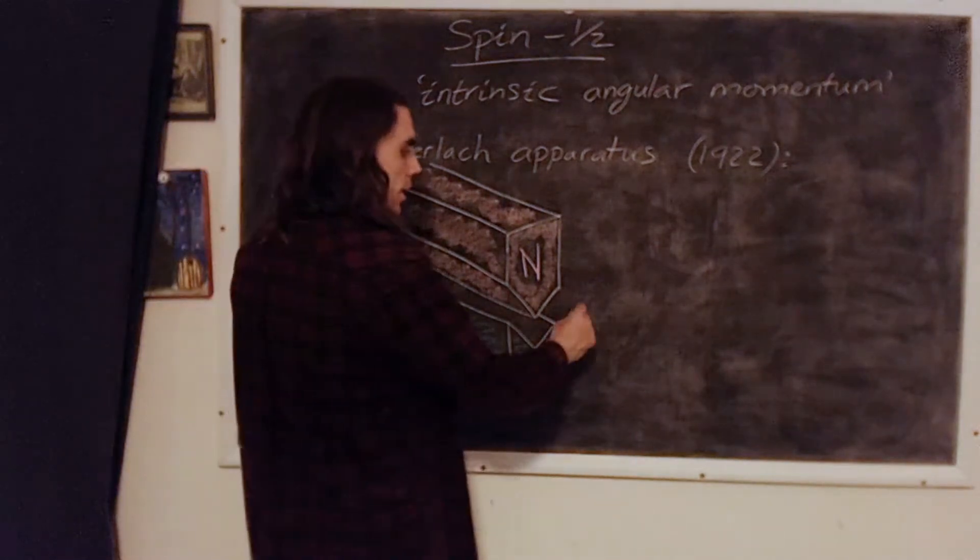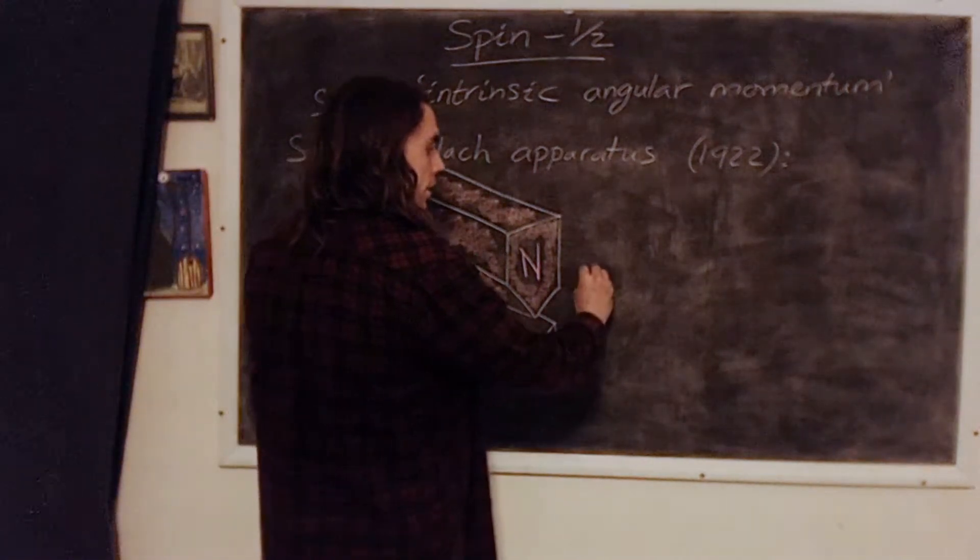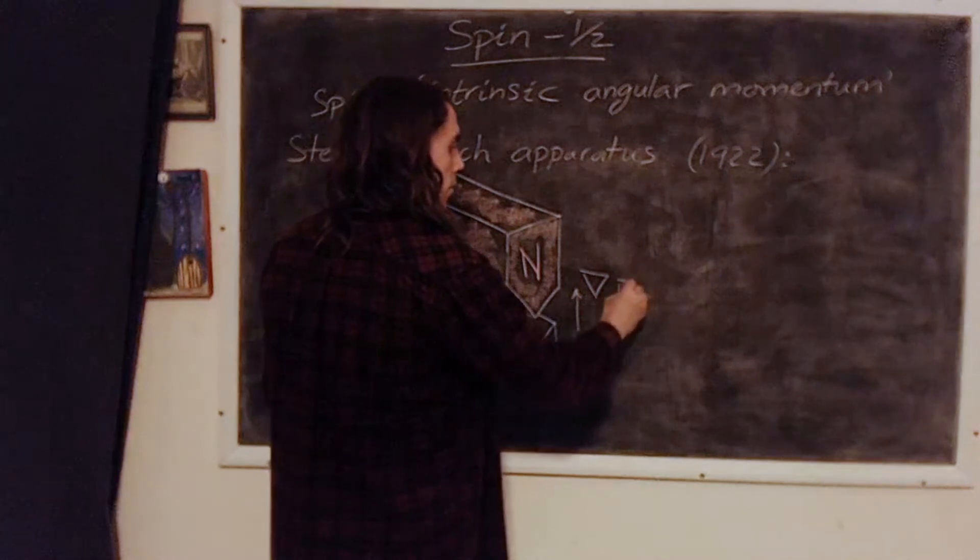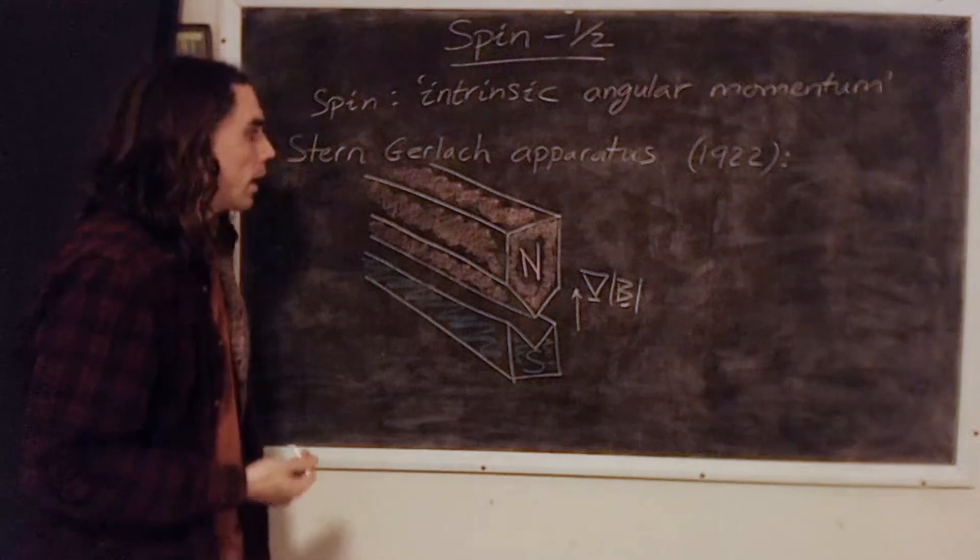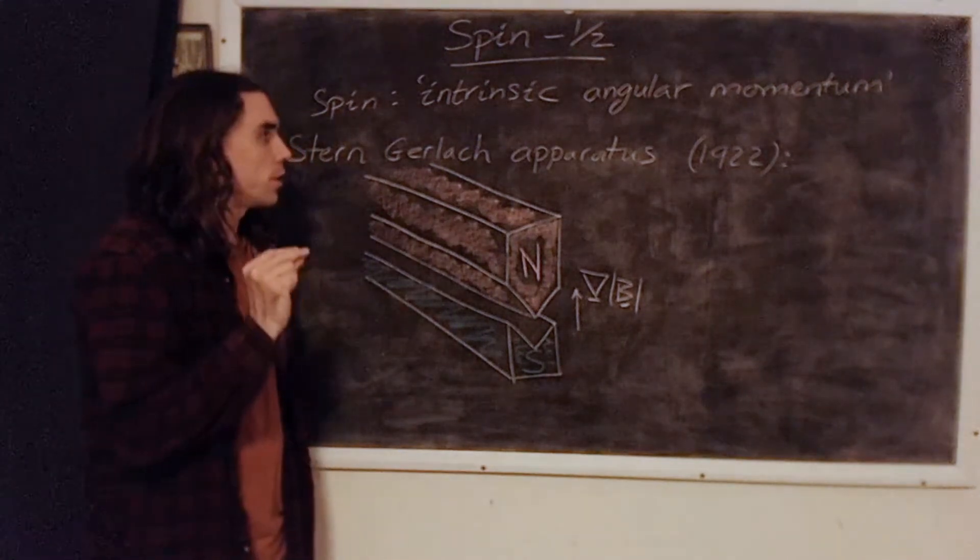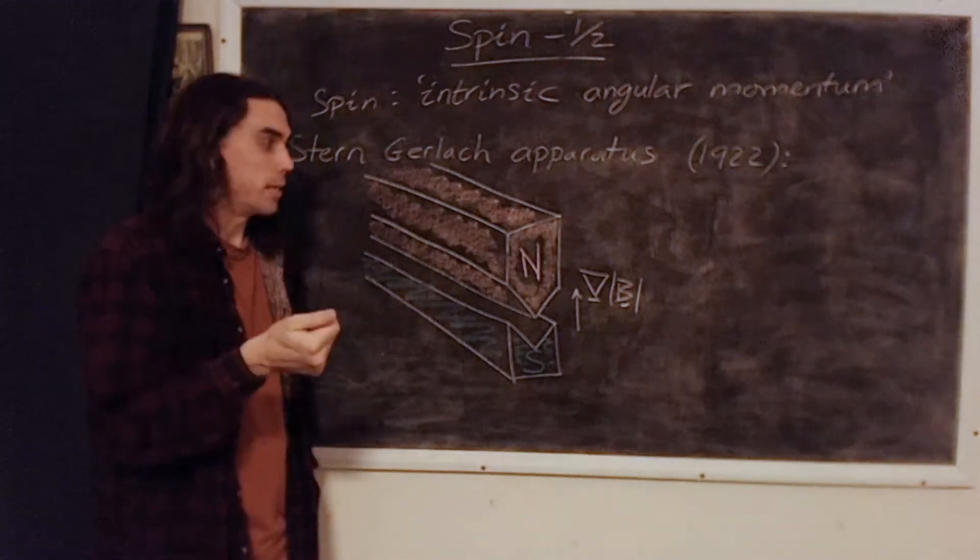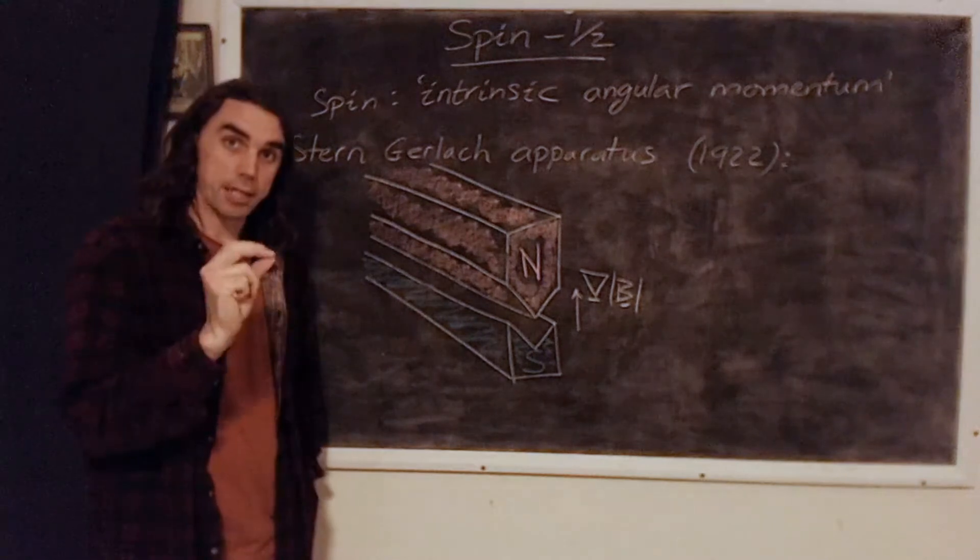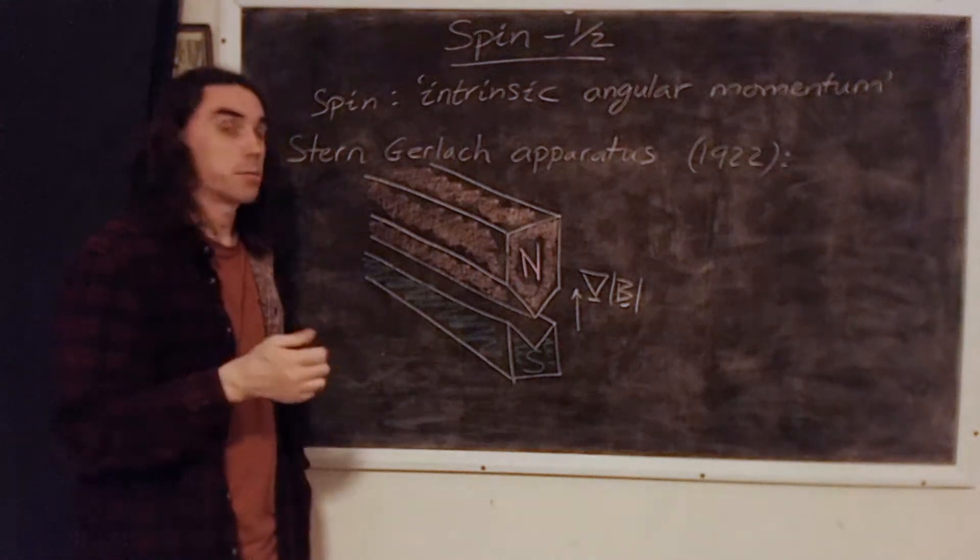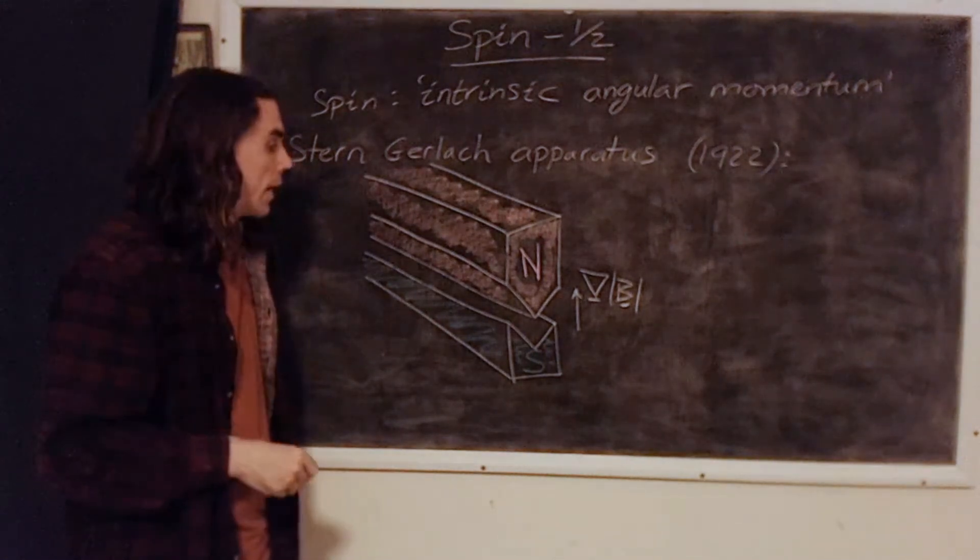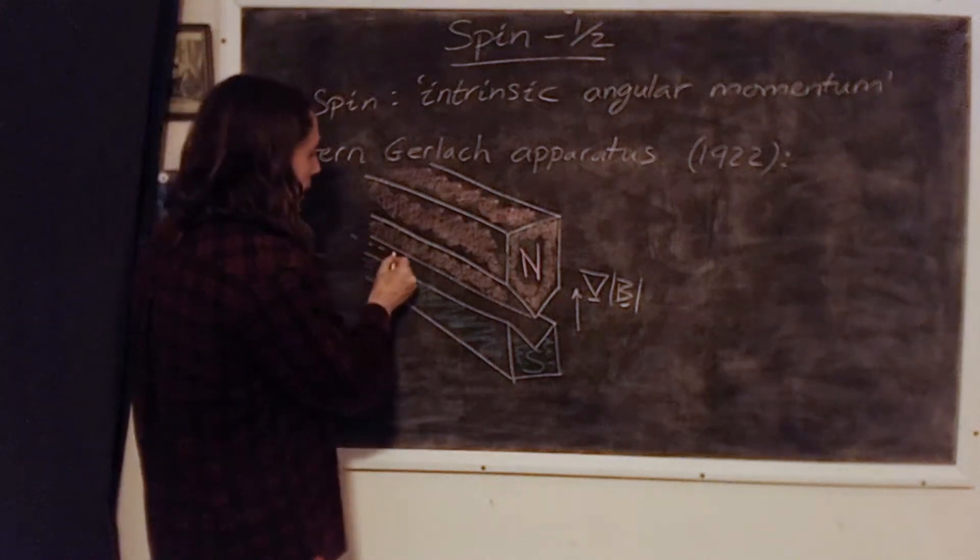And in particular, the apparatus generates a large field gradient in this direction. So we have a gradient of the magnetic field B directed in this direction. Now, the electron, if it has this intrinsic angular momentum, if it's spinning, well, it's got an electric charge. So we might expect it to have a magnetic field. And we can shoot a beam of electrons down through here.